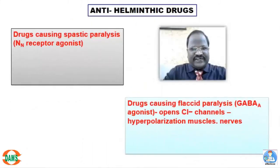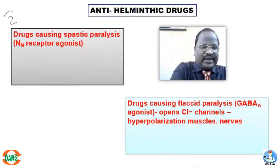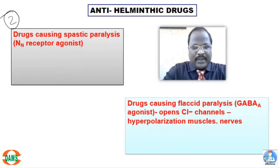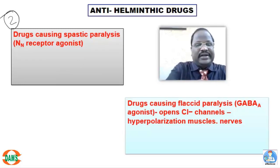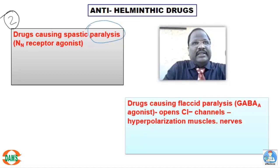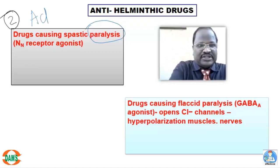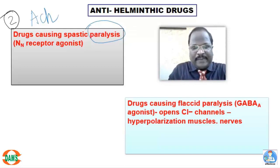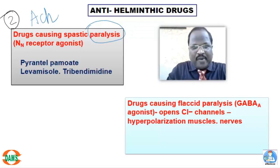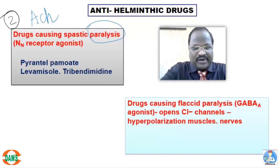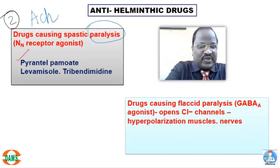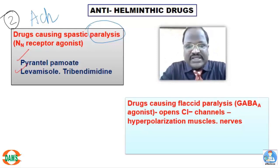The second classification: drugs that cause paralysis of worms. Some drugs act on nicotinic receptors in worms, causing spastic contraction — that is spastic paralysis. These drugs have cholinomimetic property. This category includes pyrantel pamoate, levamisole, and triclabendazole. The most important drugs are pyrantel pamoate and levamisole — they cause spastic paralysis of worms.